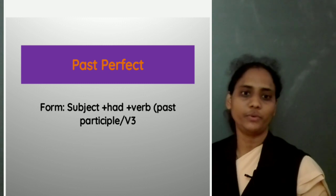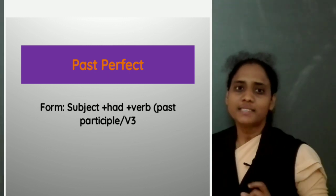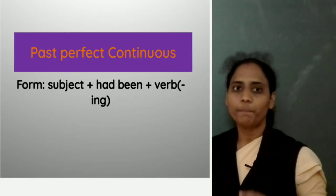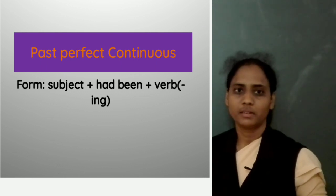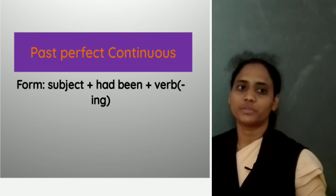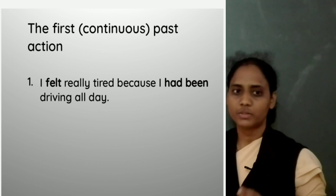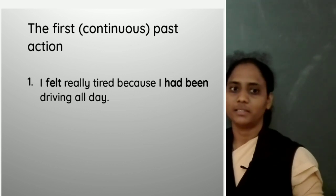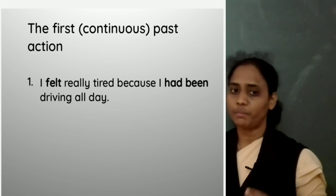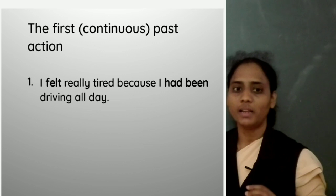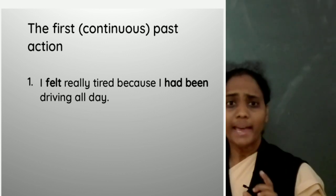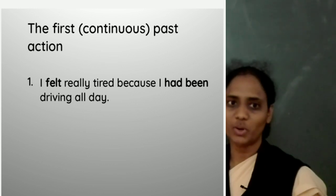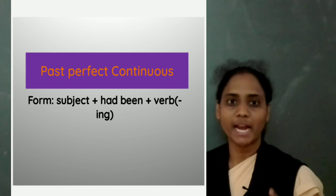Let us turn to the next tense now. This is the past perfect continuous tense. This tense is just like the past perfect tense. The difference is that here the past action continues. For example: I felt really tired because I had been driving all day. I felt tired at some point in the past, and that was because before that I had been driving that entire day. We make this tense with a subject plus 'had been' plus a verb in the '-ing' form.